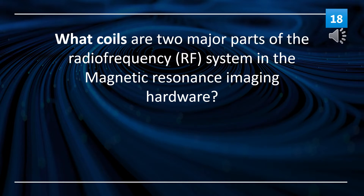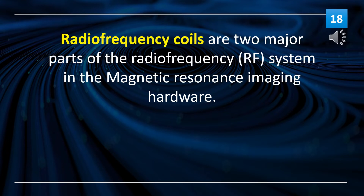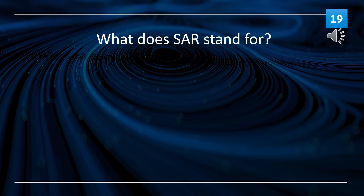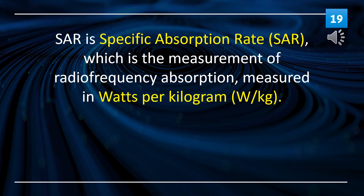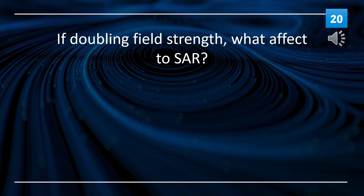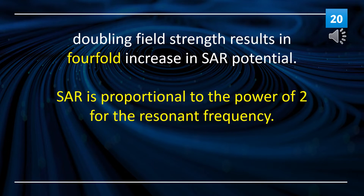What are the two major parts of the radio frequency system in MRI hardware? Radio frequency coils are the two major parts. SAR stands for specific absorption rate, which is the measurement of radio frequency absorption, measured in watts per kilogram. Doubling field strength results in a four-fold increase in SAR potential — SAR is proportional to the power of 2 for the resonant frequency.